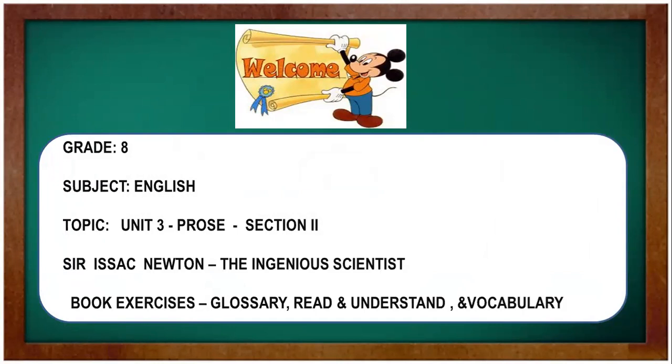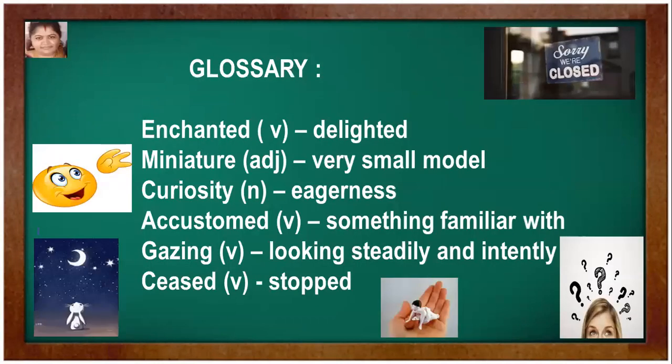Glossary — read, understand, and vocabulary. Enchanted is a verb, it means delighted. Miniature is an adjective meaning very small model. Curiosity is a noun, it means eagerness. Accustomed is a verb meaning something familiar with. Gazing is a verb meaning looking steadily and intently. Seized is a verb, it means stopped.